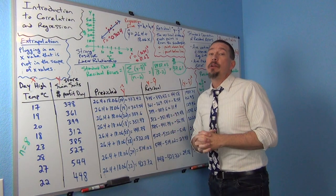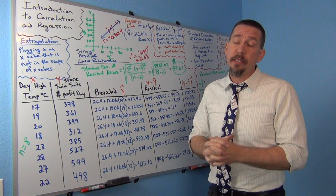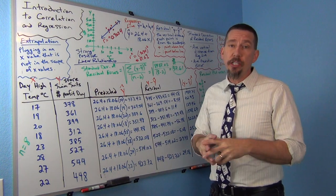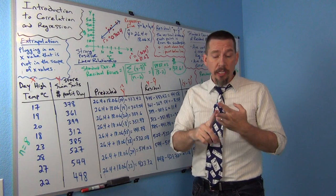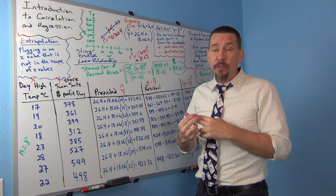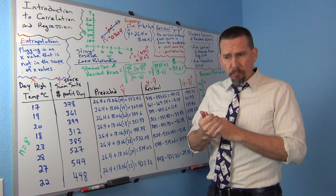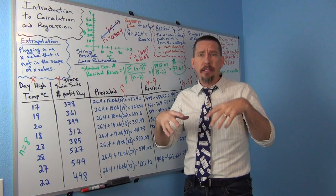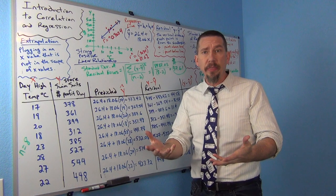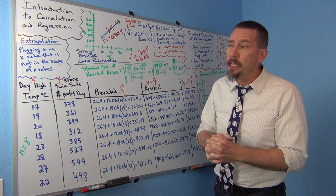So last time we looked at some of the famous statistics that we calculated in correlation and regression, including the correlation coefficient, r squared, the coefficient of determination, slope, y-intercept, and the regression line. We kind of saw how those were calculated and what they mean, how to explain them.